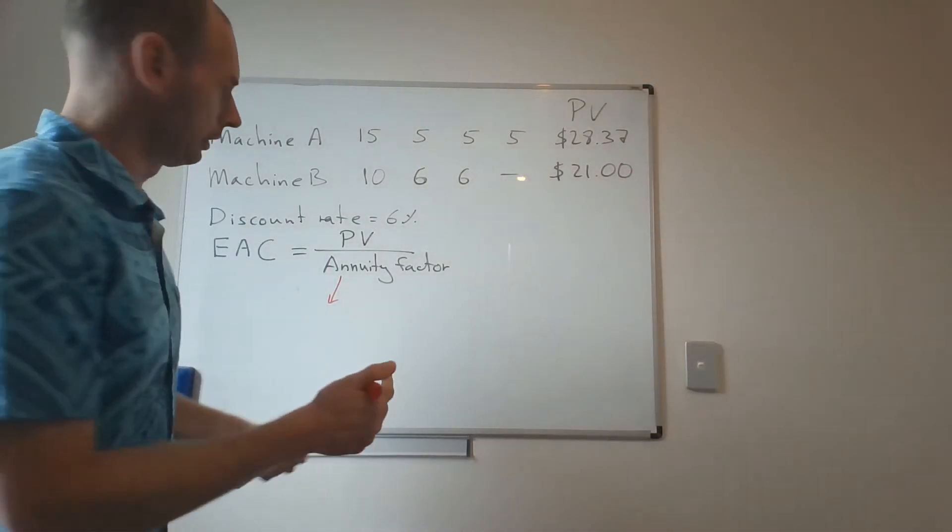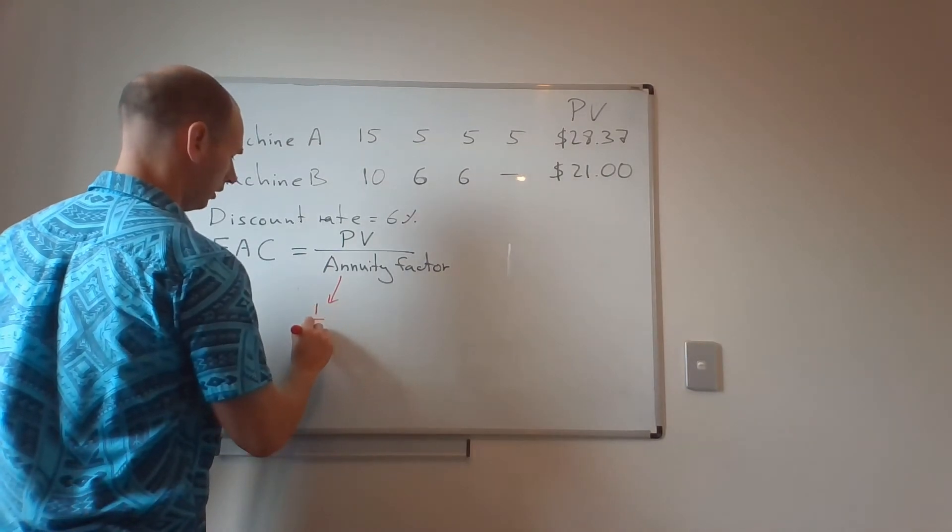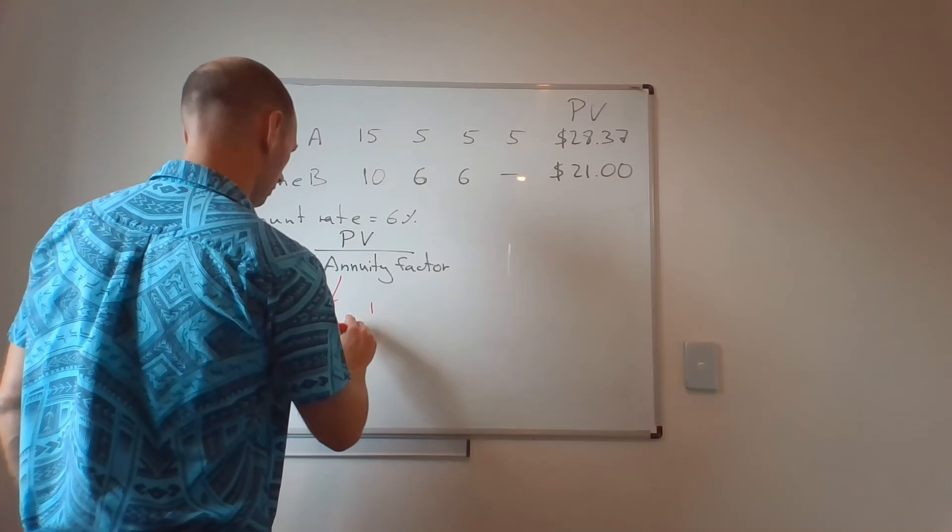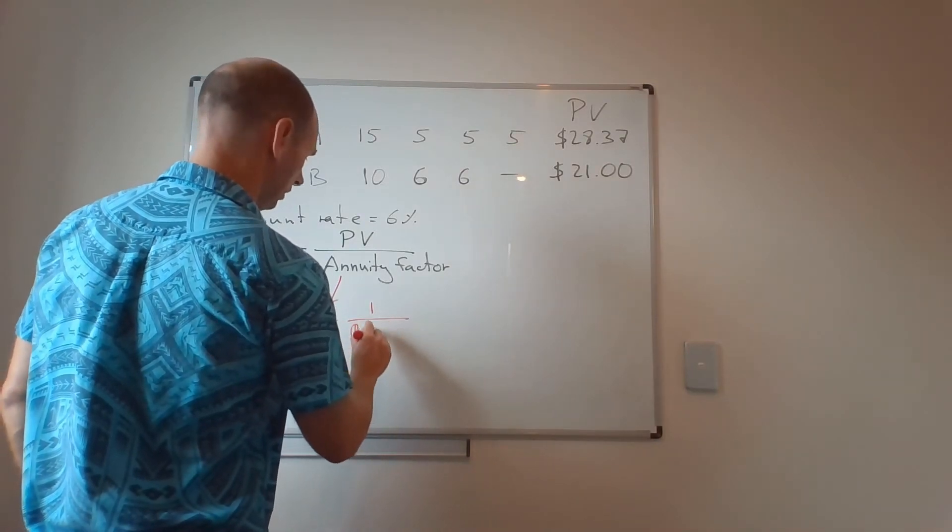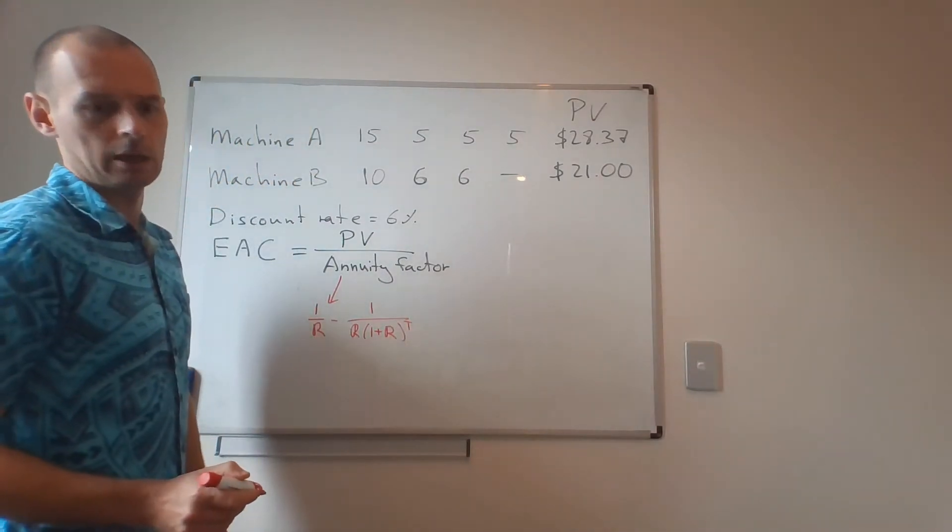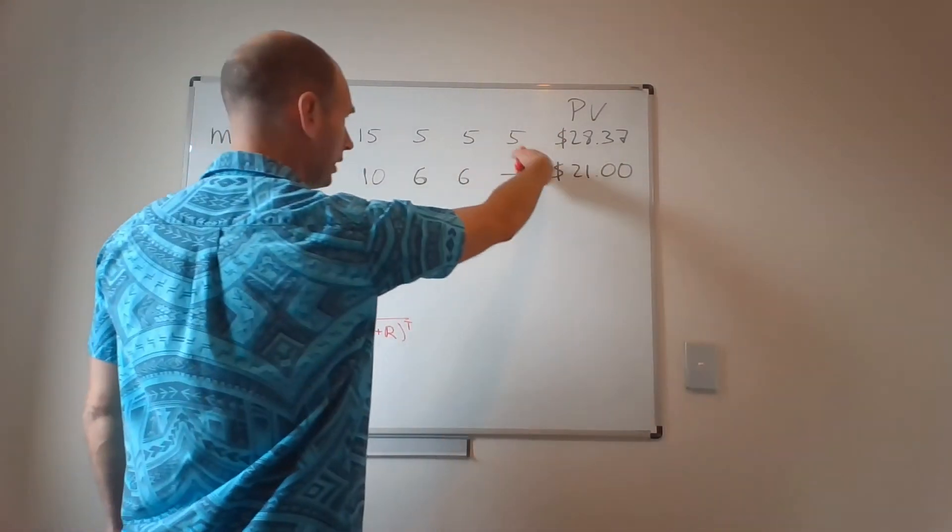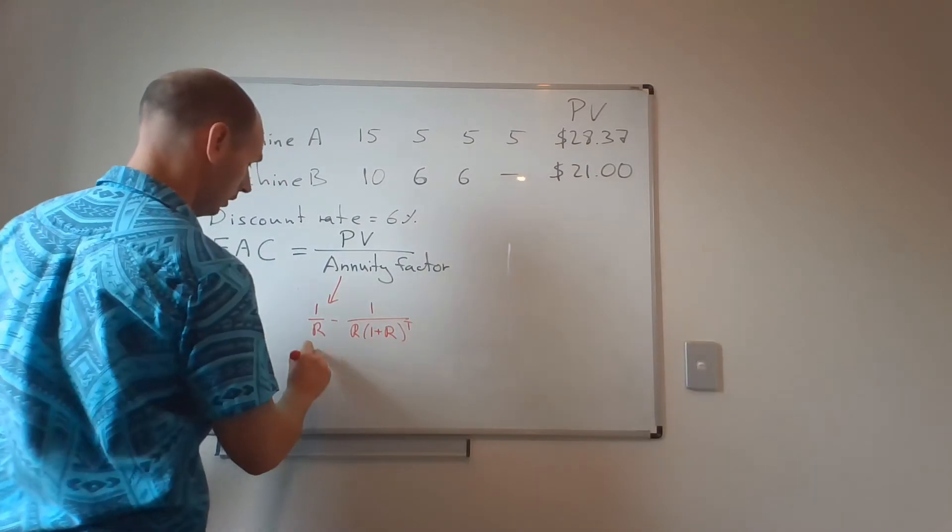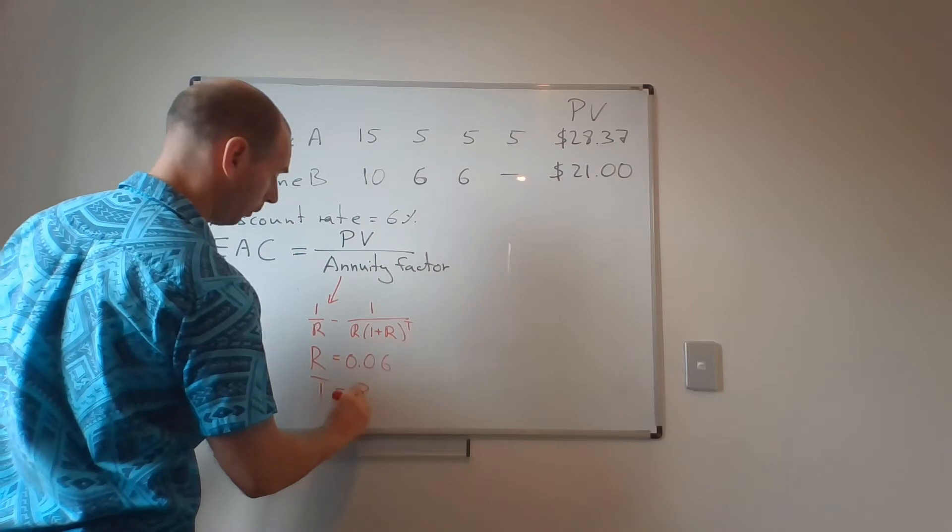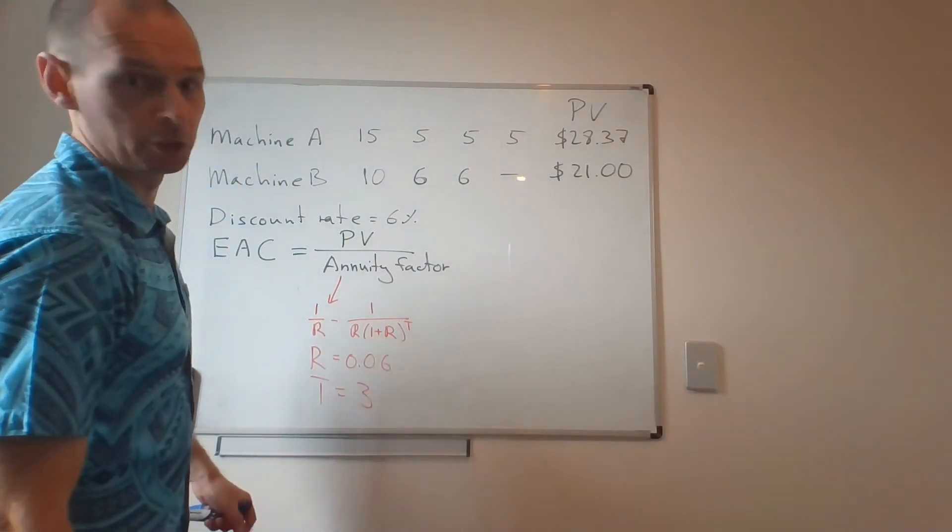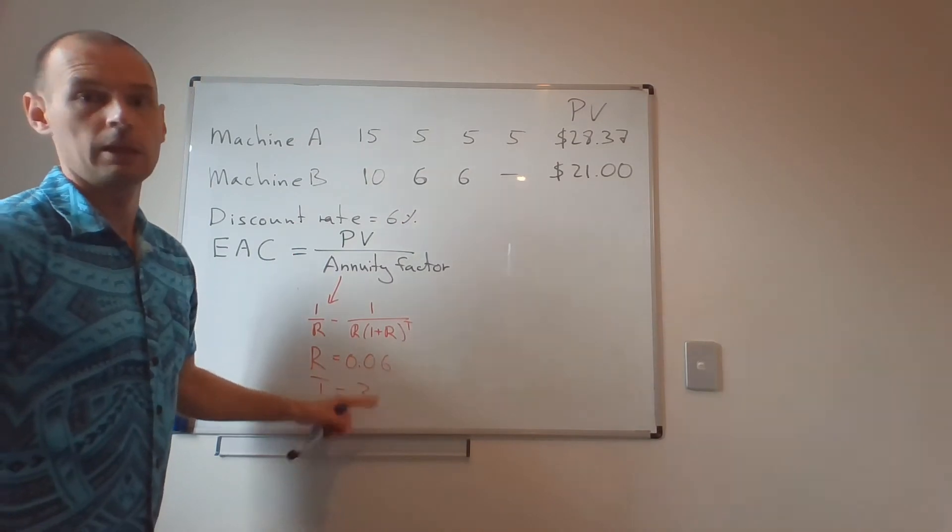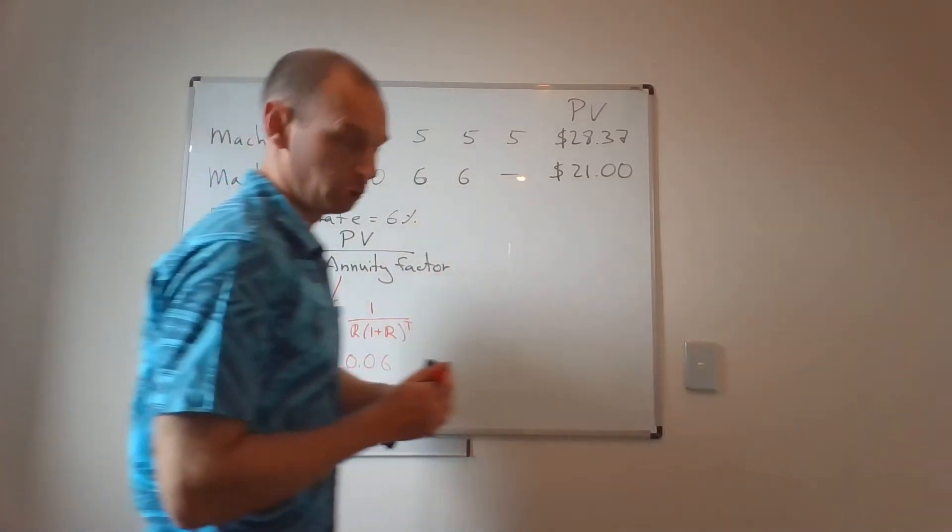The formula is 1 over r minus 1 over r times 1 plus r to the power of t. So in case of a 3-year annuity factor, our r is equal to 0.06, and our t equals to 3. For Machine B, instead of 3, you will have to plug in 2. That's how you get this annuity factor.